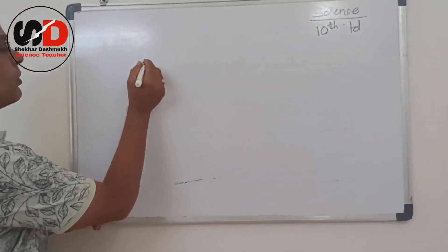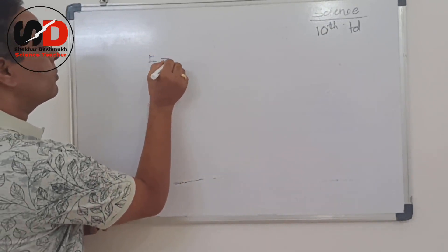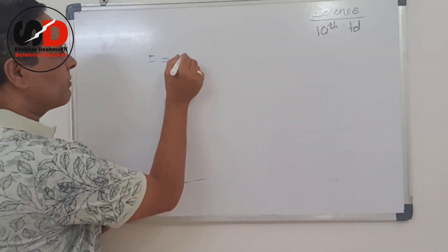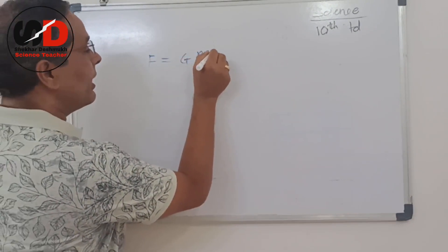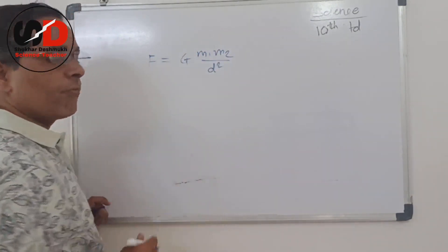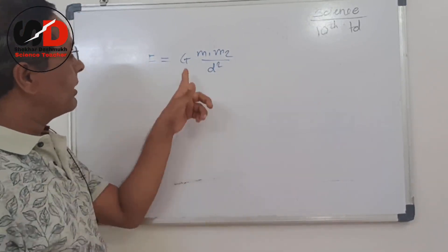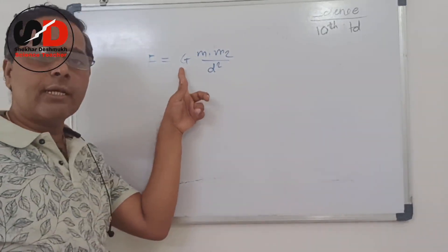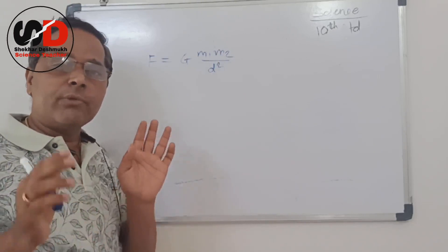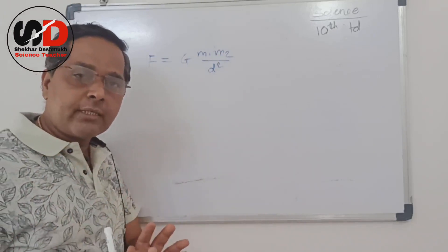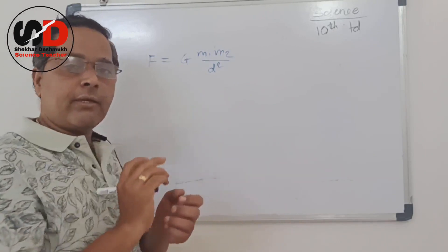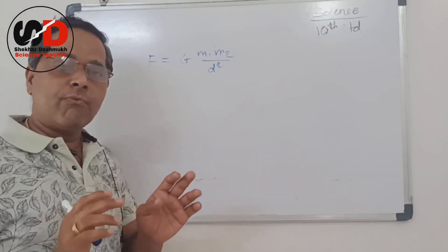So, the law of gravity gives us: F = G × M1 × M2 / D², where G is the universal gravitational constant, M1 and M2 are the masses of the two objects, placed at a distance D from one another.